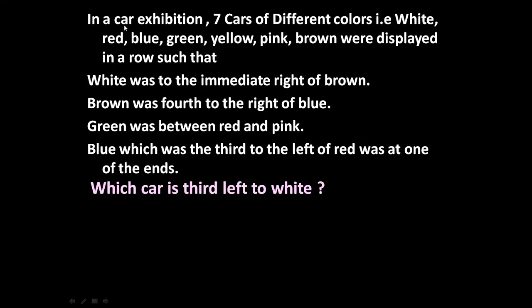Here the given problem is: in a car exhibition, 7 cars of different colors—white, red, blue, green, yellow, pink, and brown—were displayed in a row such that white was to the immediate right of brown, brown was fourth to the right of blue, green was between red and pink, and blue which was the third to the left of red was at one of the ends.